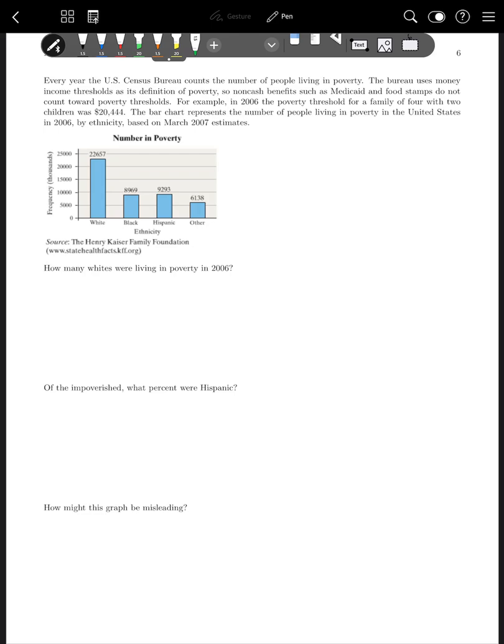Now that you've had a chance to try this, let's go through these together. How many whites were living in poverty in 2006? We just read the number, which is 22,657. But notice it's in thousands this time, which means I need to add three zeros. Millions means I add six zeros. Thousands means I add three zeros. Of the impoverished, what percentage were Hispanic? We need to know the total: 22,657 plus 8,969 plus 9,293 plus 6,138.